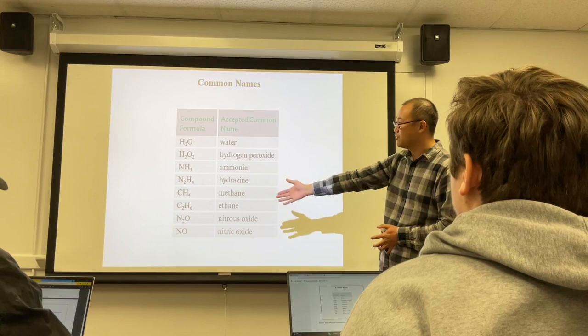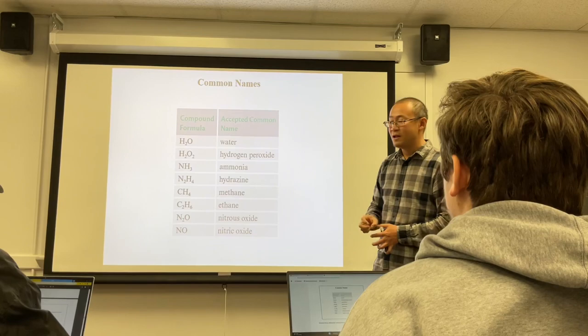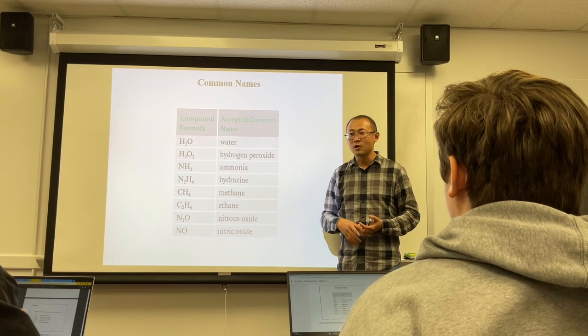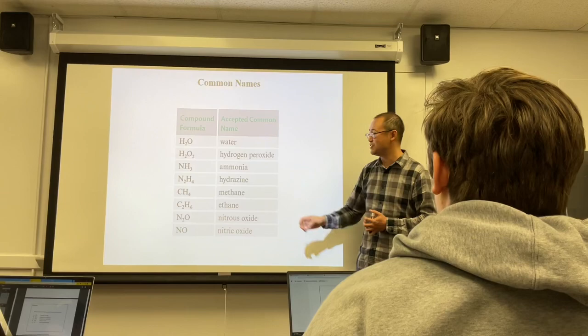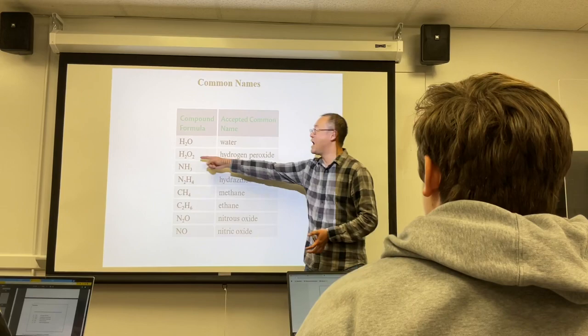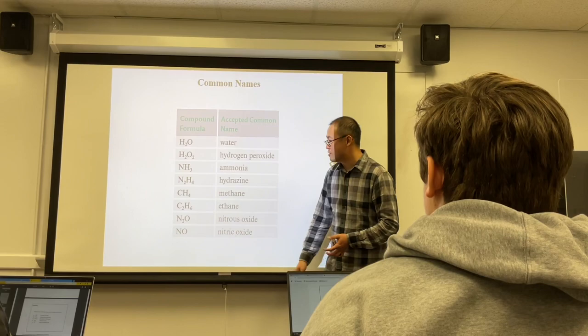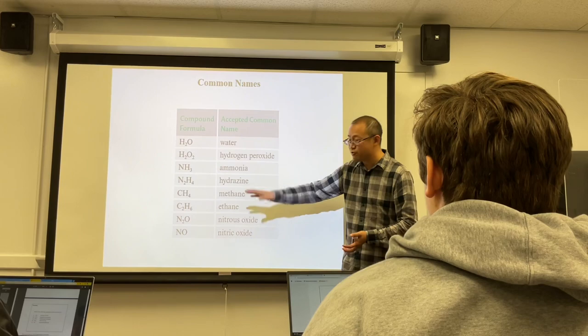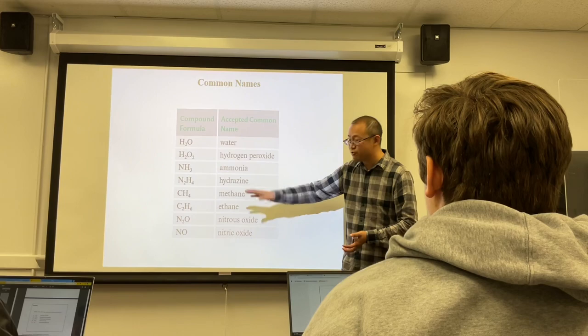For example, combustion of charcoal (carbon) reacting with oxygen gives carbon dioxide. Carbon atoms rearrange to bind with oxygen. Sulfur reacting with oxygen gives sulfur dioxide — sulfur rearranges to combine with two oxygen atoms. Before and after, atoms never changed; only the arrangement changed. Because of this, all chemical equations follow the law of conservation of mass.